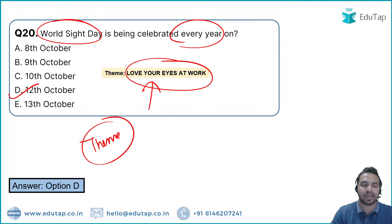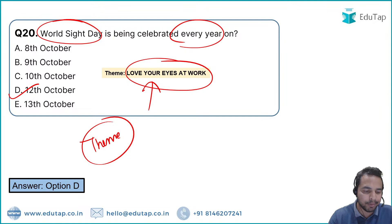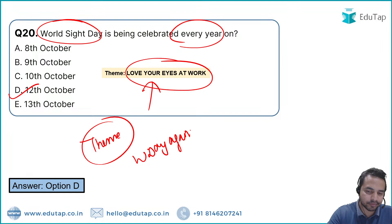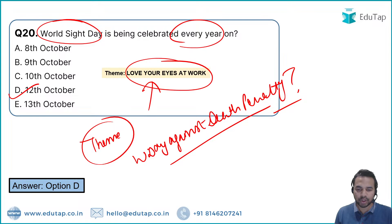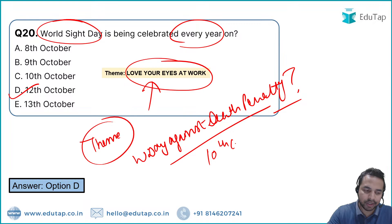Bonus: The World Day Against the Death Penalty is celebrated on 10th October. That is the correct date — 10th October.